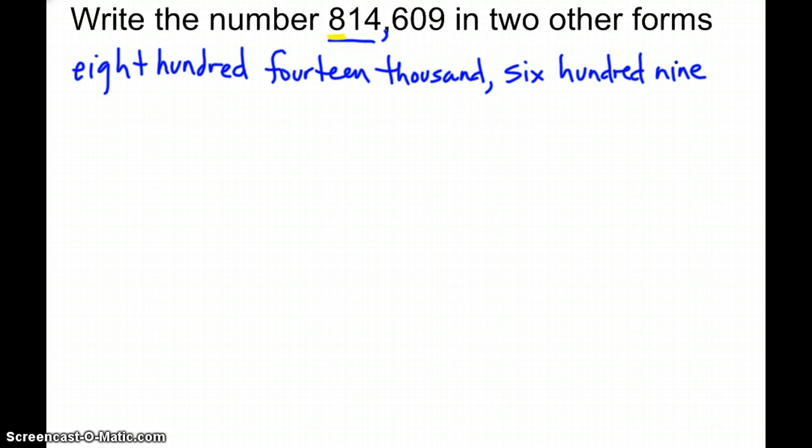So for my first one, I look and I have an 8 in the 100,000s, so in parentheses I'm going to do 8 times 100,000. And then I'm going to add that to a 1 in the 10,000s, so I do 1 times 10,000. And then I'm going to add that to a 4 in the 1,000s, so I do 4 times 1,000.